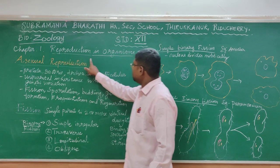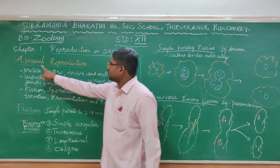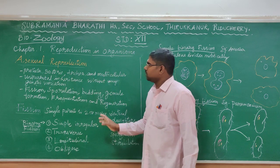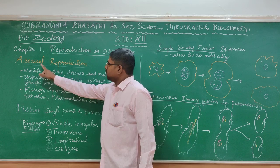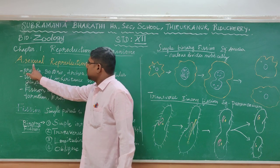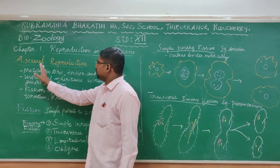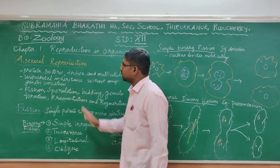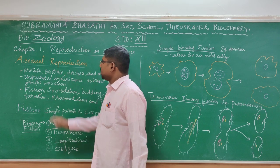Chapter 1, Reproduction in Organisms. Let me continue from the topic Asexual Reproduction. Asexual Reproduction — 'A' means absence. Absence of sexual parts in the organisms, by means of which reproduction occurs. That is why it is called Asexual Reproduction.